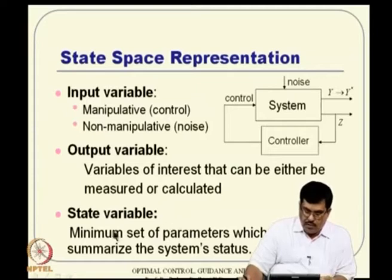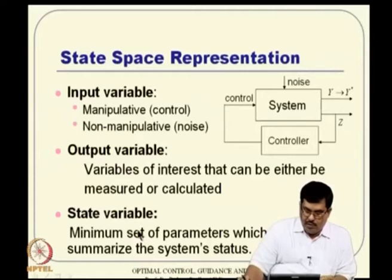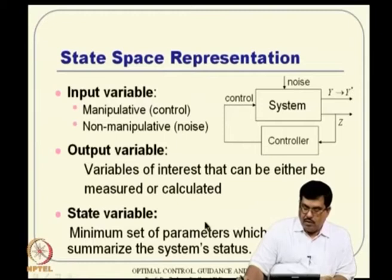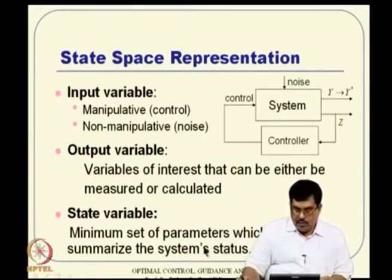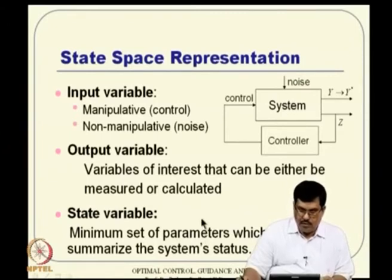More definitions and implications can be found in a standard textbook on system theory, and any modern control book will give you more insights with examples. We understand what we mean by state variable — it is the minimum number of variables which can describe the system state. You cannot take more than the required state variables, nor can you take less than what is required.